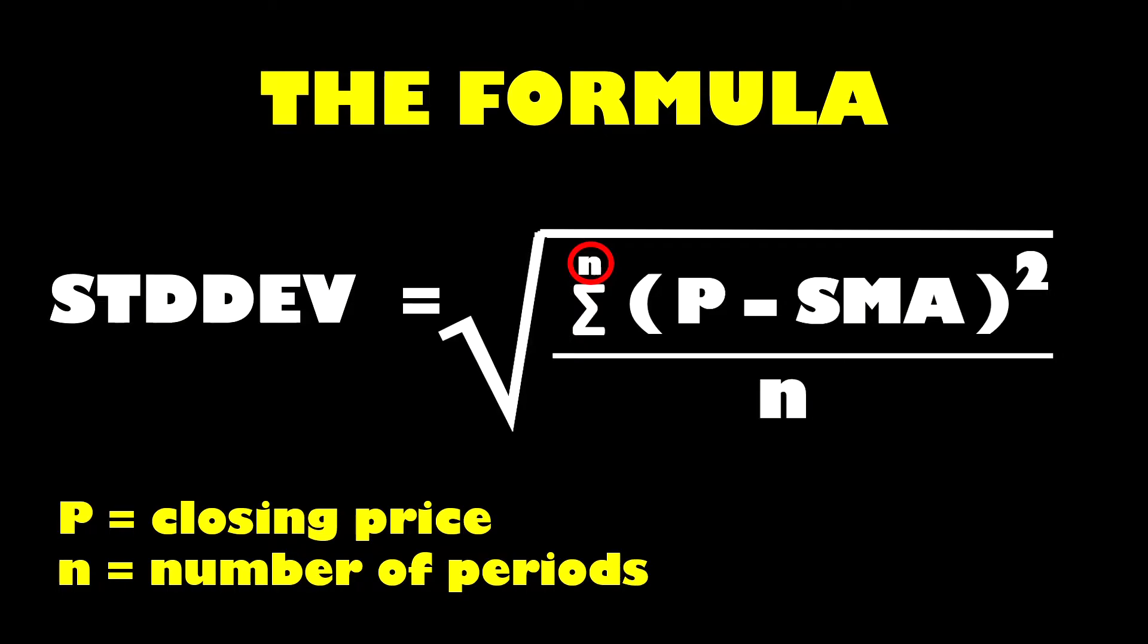And so for each of those 14 periods we take the closing price and we subtract from it the current simple moving average. Important to note that's the current simple moving average, not that period's particular simple moving average. Then you square your figure and as we said repeat that for each of the 14 periods.